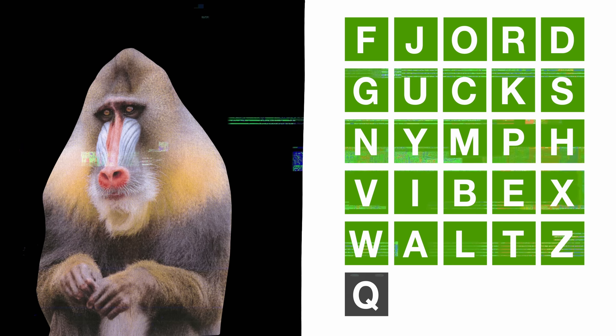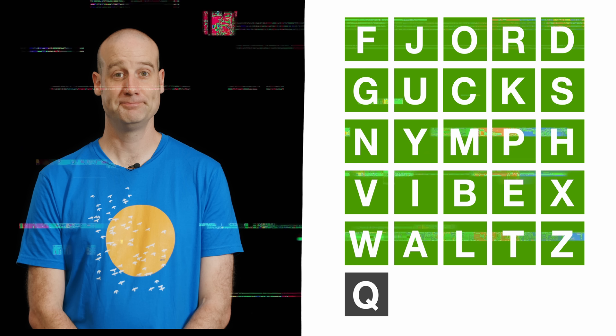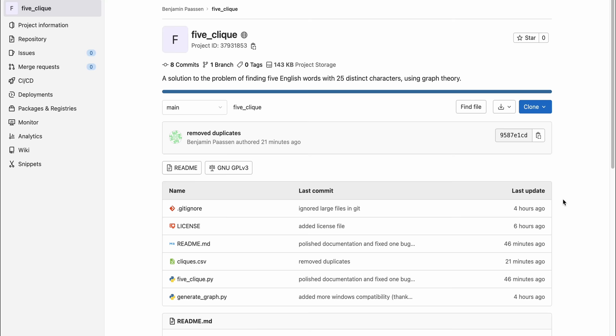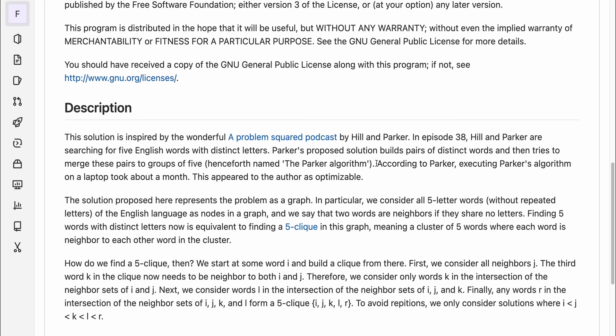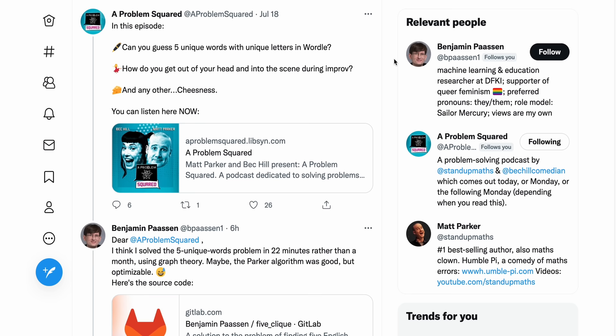Future Matt here. So the podcast episode went out yesterday and within 24 hours, someone says they've written code which will do what took my computer a month in under a day. So let's check it out. They put it on GitLab. I will link to this below. They've got all the files and a bit of a description down here. Including, and this is I think one of the greatest disses you're ever going to see on GitLab. According to Parker, executing Parker's algorithm on a laptop took about a month. This appeared to the author as optimizable. In other words, Matt's an idiot.